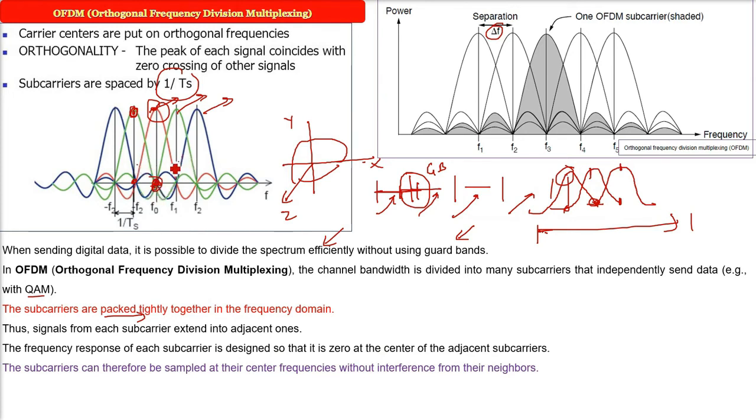So the sub-carriers can therefore be sampled at the central frequencies because others are not interfering, the neighbors are not interfering. But still we need to have a guard time. I am not saying guard bands will be there, but a guard time is surely needed to repeat the portion of the symbol signals in time, so that they have the desired required frequency response.